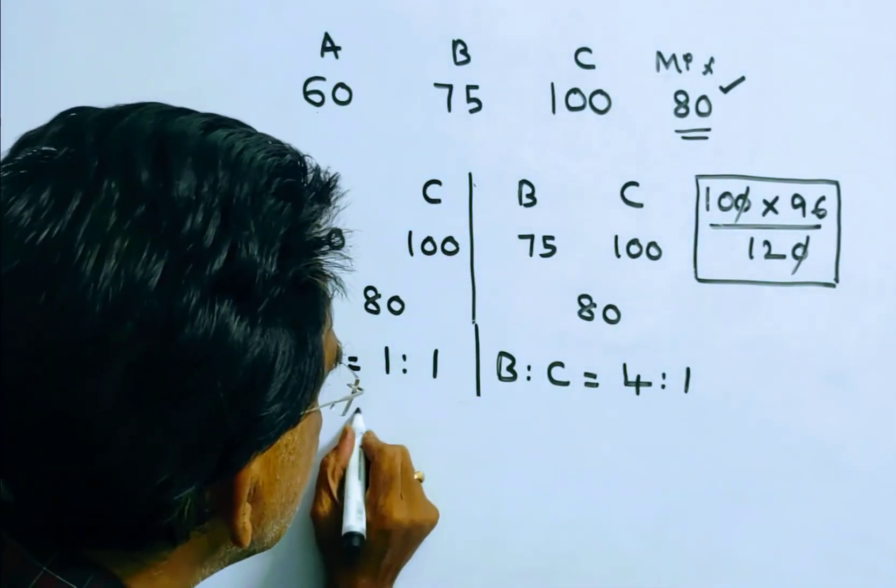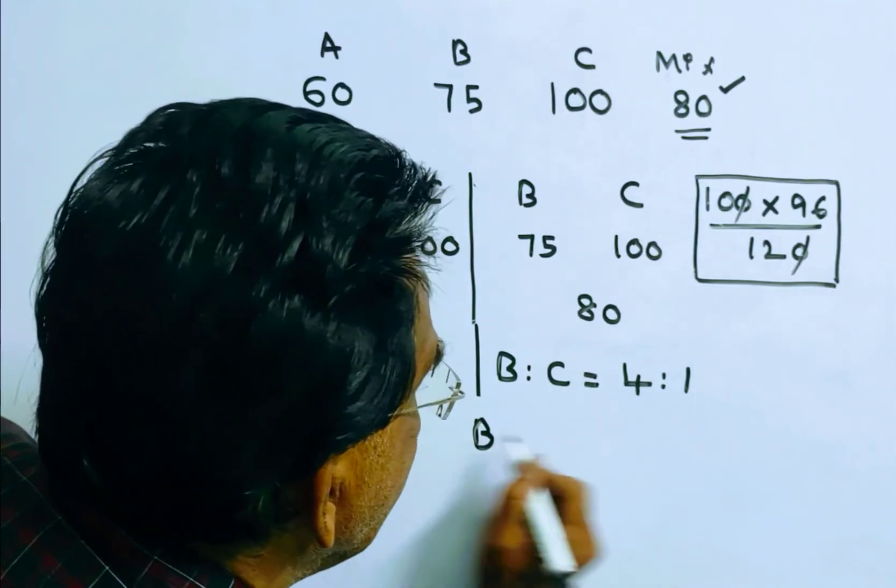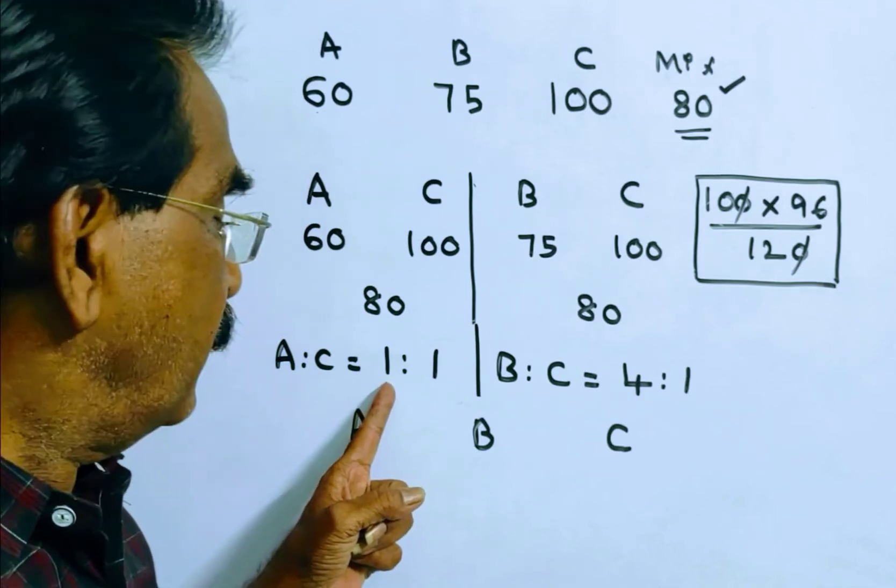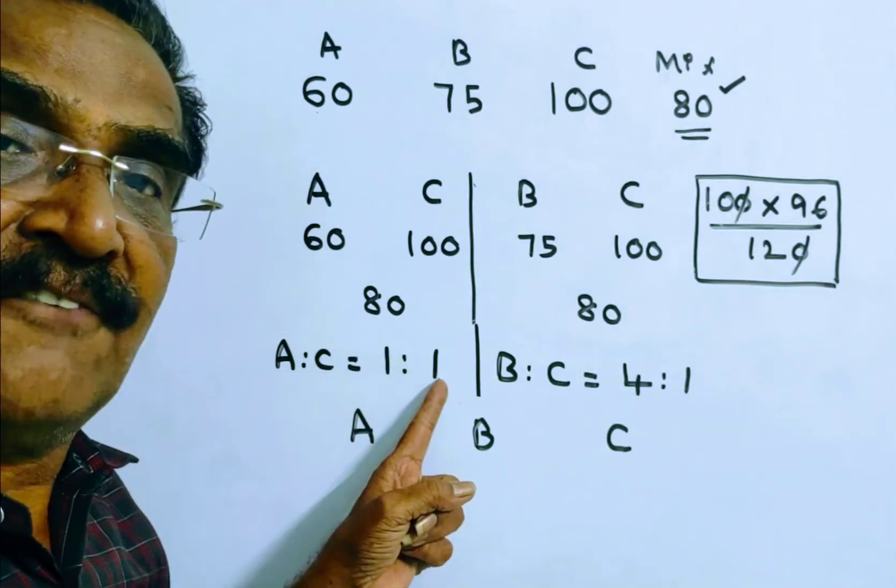Now let us see the proportion of A, B, and C. For every one kg of type A, we have to take one kg of type C.